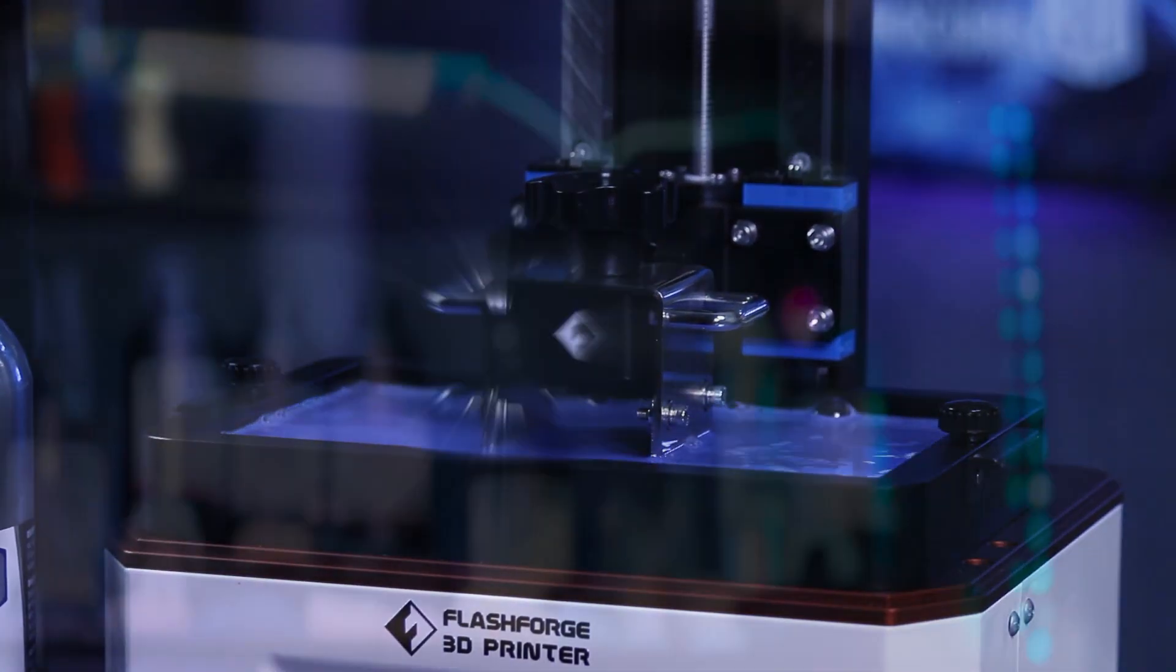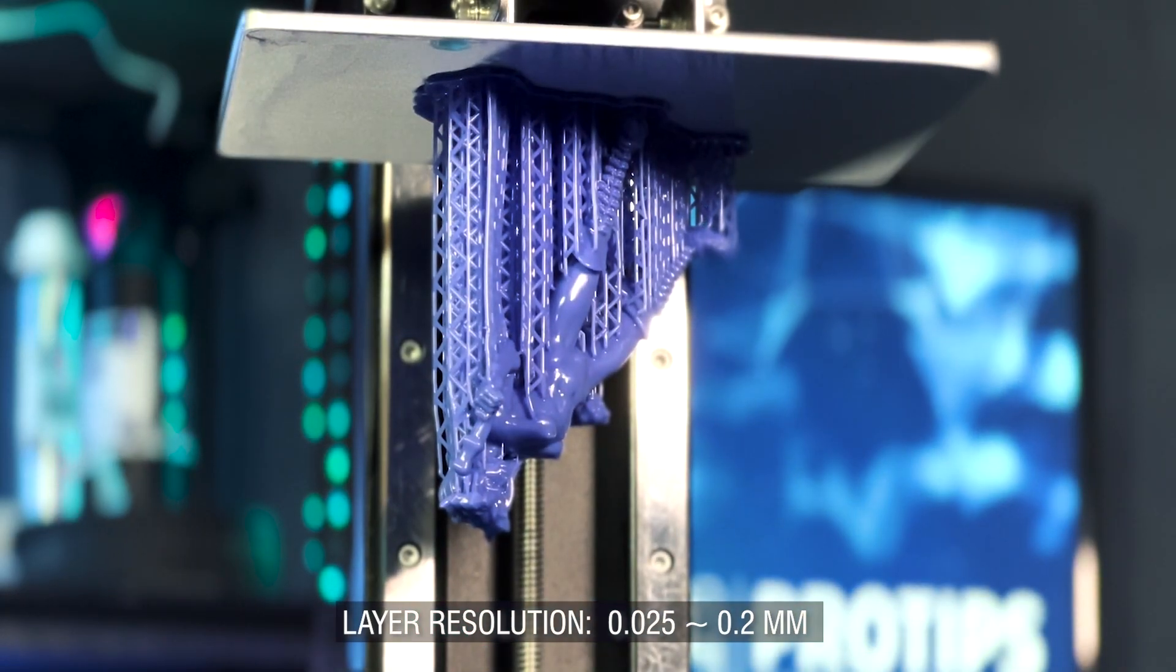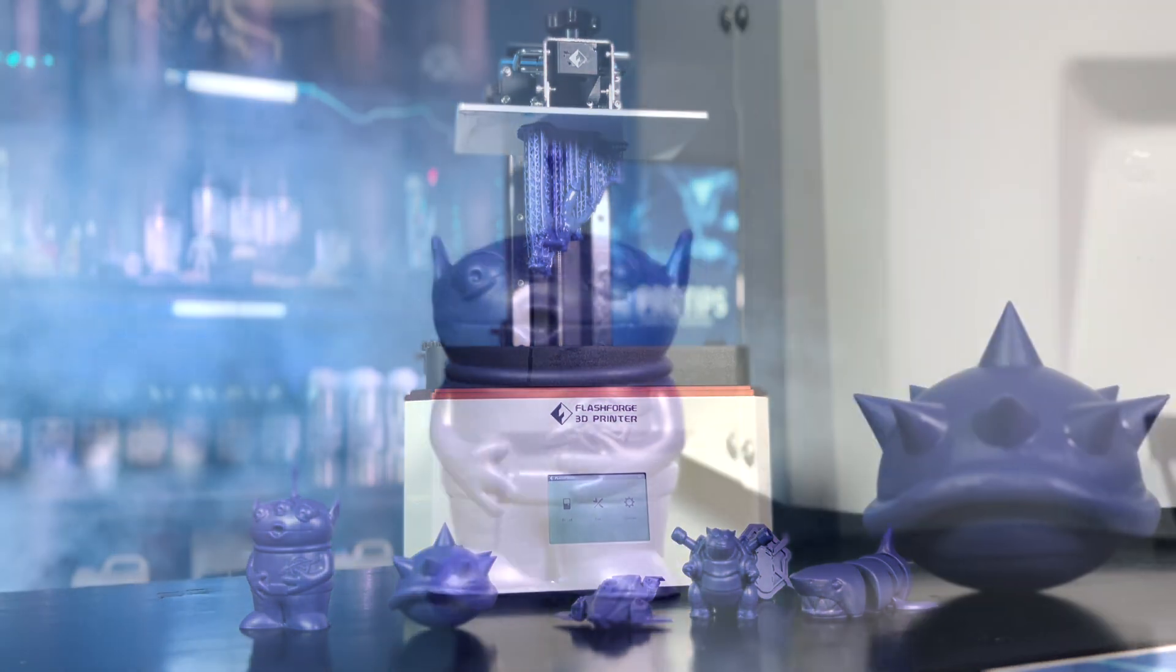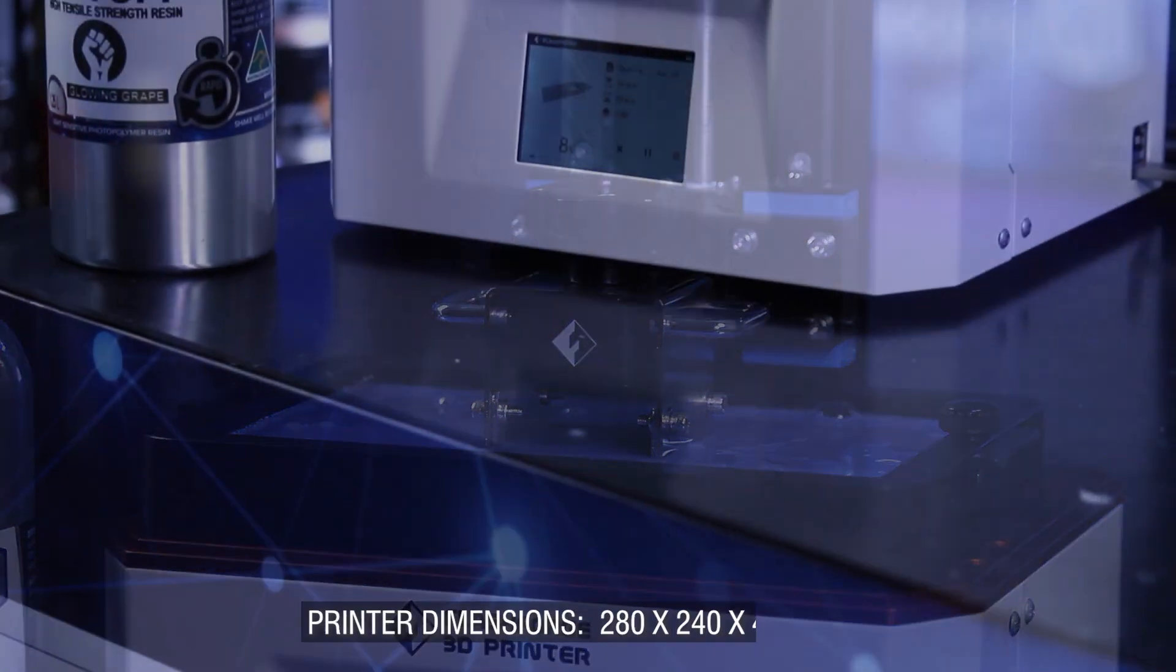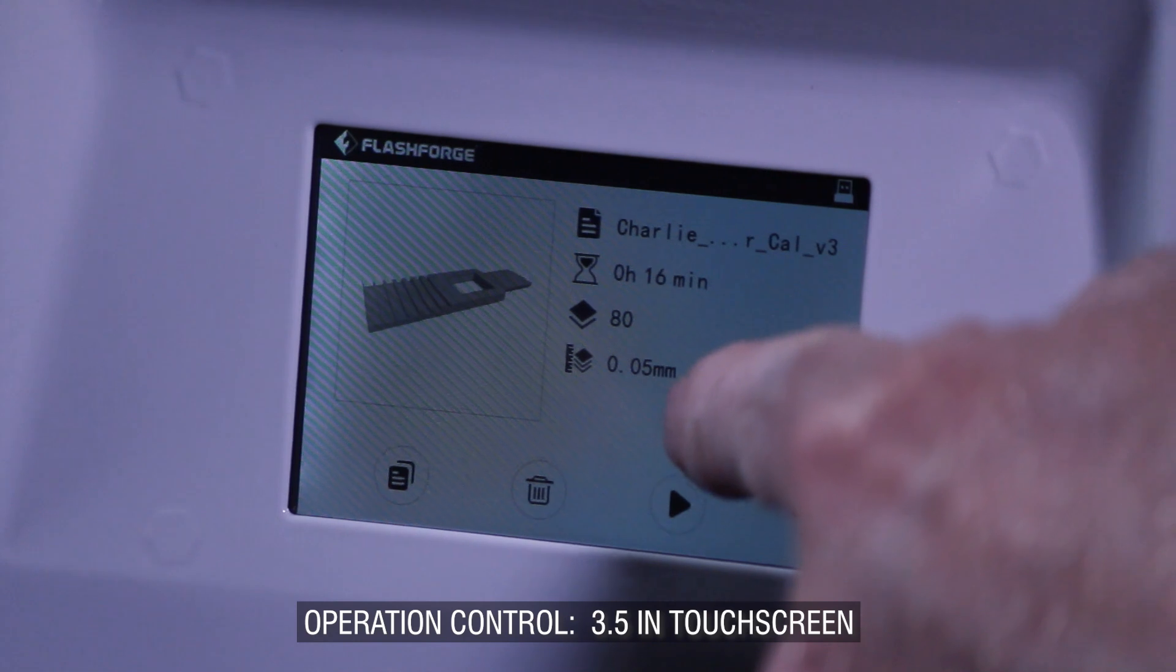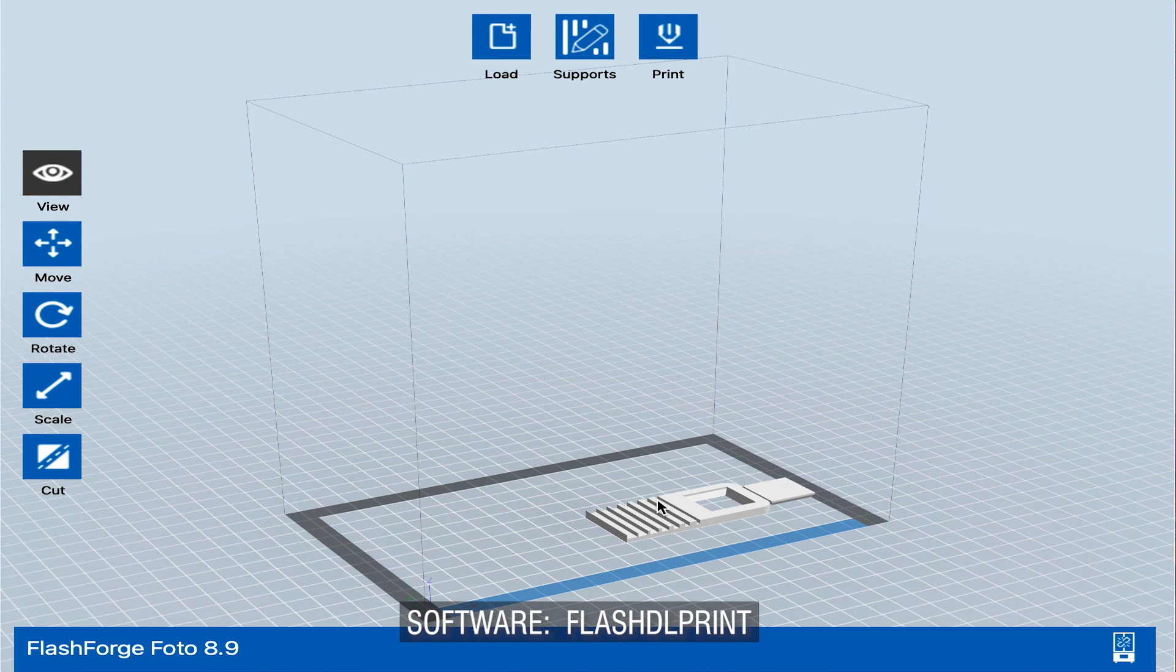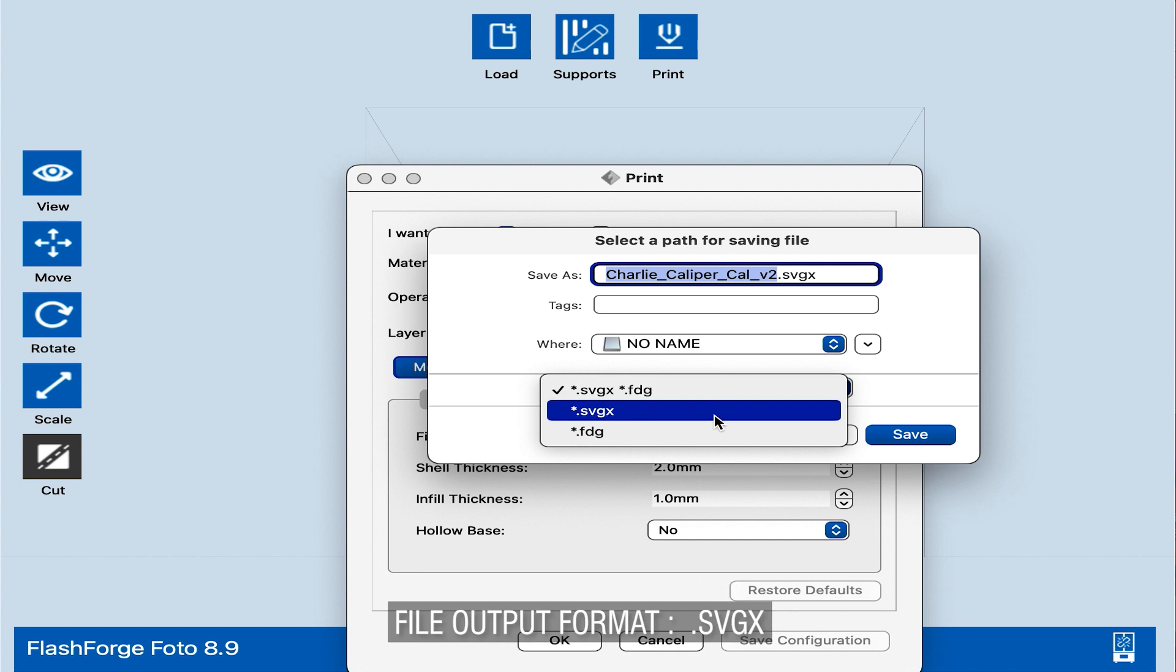Okay, guys. Time for the specifications. So, I've got a layer thickness of 0.025 to 0.2. So, that's 25 microns to 200 microns. It's interesting it doesn't go to 10 like most of them. Print volume 192 by 120 by 200 millimeters. Precision plus minus 0.05 millimeter. Print speed 10 to 50 millimeters an hour. Printed dimensions 280 by 240 by 465. The touchscreen is a 3.5 inch. It's too small in my opinion. The net weight is 12.5 kilos and the gross weight is 15. Connectivity was USB. Software flash DLP prints which we discovered the hard way. And the file output format is SVGX.